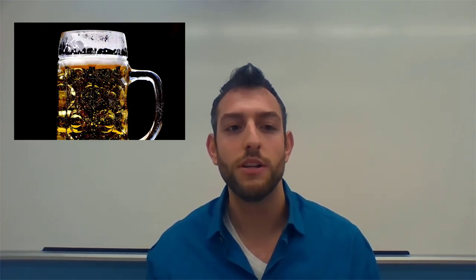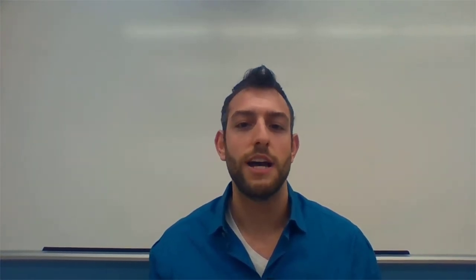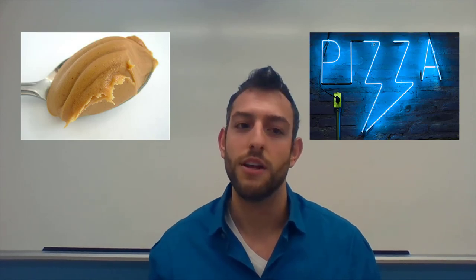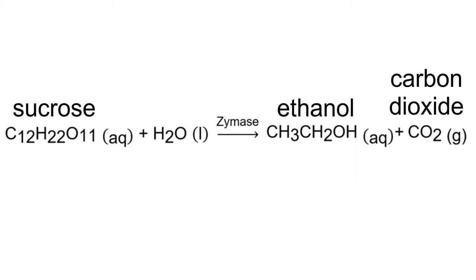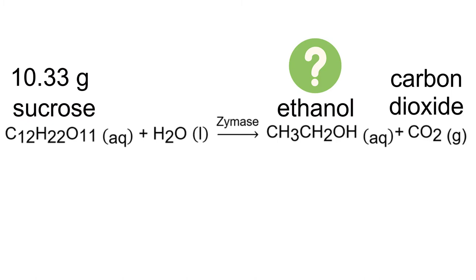The example we are going to go over today some may say is the most important chemistry reaction known to man. I believe the reactions that break down peanut butter or pizza in my body are more important, but that is a story for another day. The reaction we are going to be looking at is the fermentation of sucrose by yeast in an aqueous solution that produces ethanol and carbon dioxide when anaerobic conditions are used. The question we want to answer is: how many grams of ethanol will be produced if the yeast starts with 10.33 grams of sucrose?